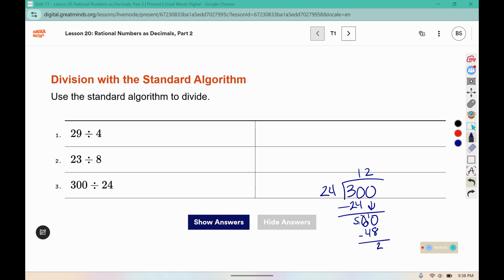10 minus 8 is 2. 5 minus 4 is 1. There's a decimal here, so make sure it's lined up in your correct place value, and 24 fits into 120 exactly five times. So here for number 3 it should say 12 and a half or 12.5. Please complete problems 1 and 2.